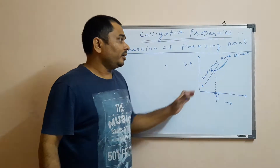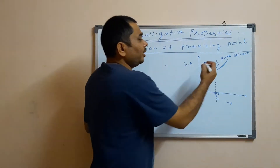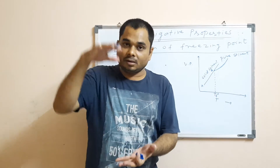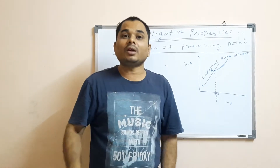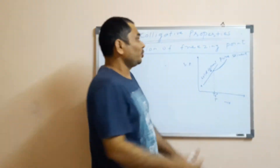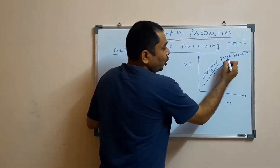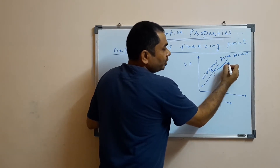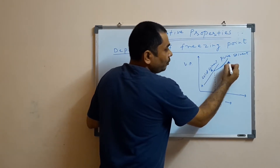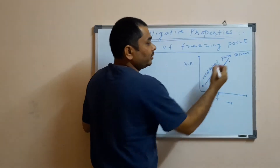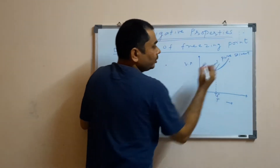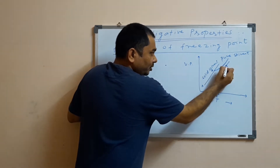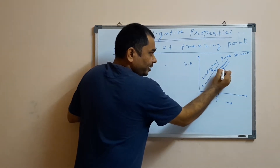When a non-volatile solute is added to a solvent, the vapor pressure decreases. This is called lowering of vapor pressure. If a non-volatile solute is added, the solution formed will have a vapor pressure lower than that of the pure solvent. As you decrease the temperature, the vapor pressure goes on decreasing.